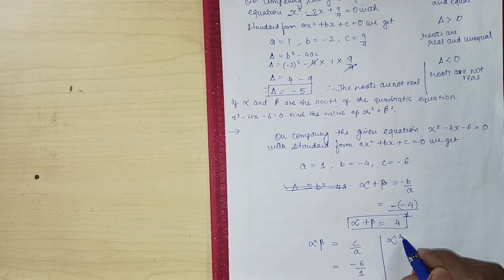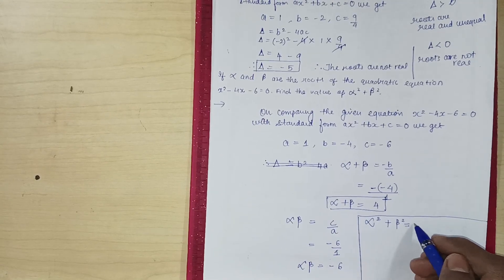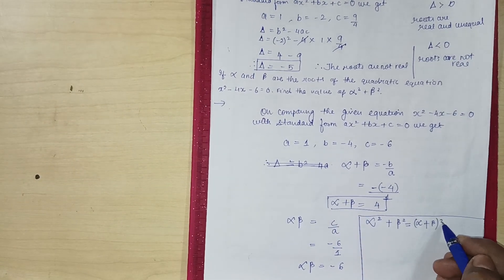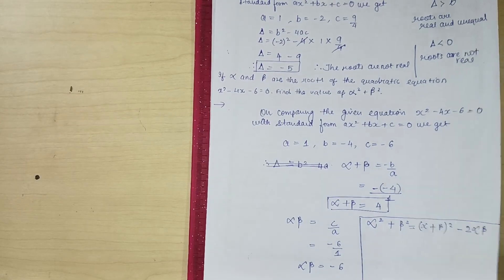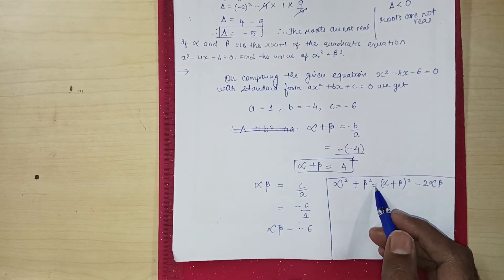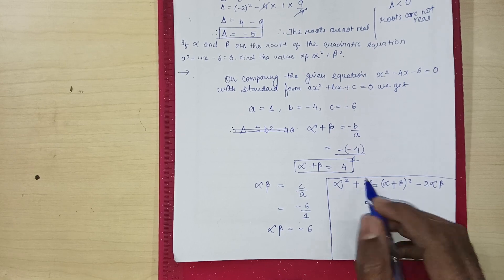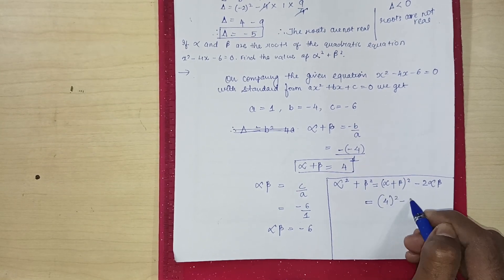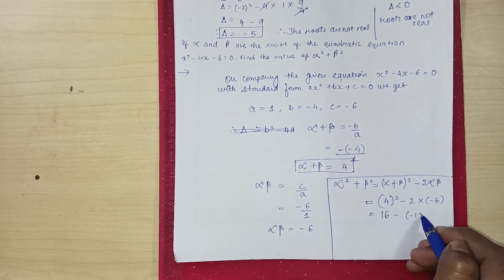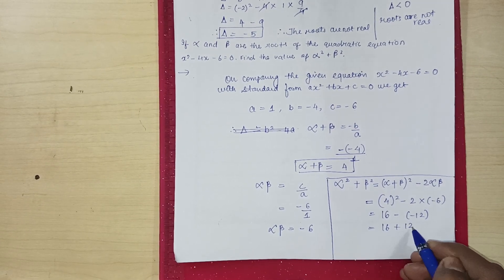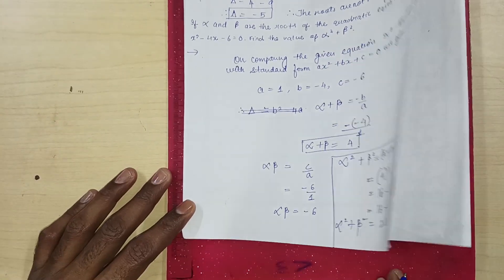Alpha square plus beta square, alpha square plus beta square, what is the formula? Say loudly. Alpha square plus beta square is equal to alpha plus beta the whole square minus two alpha beta. Alright, alpha plus beta the whole square is equal to alpha plus beta the whole square minus two alpha beta is equal to alpha plus beta the whole square is 4 square minus 2 into minus 6. 16 minus 2, 6 is how much? 12 minus. 16 plus 12. Answer is 28. Alpha square plus beta square is equal to how much? 28. That's it, understood everybody.